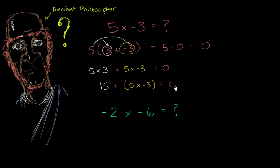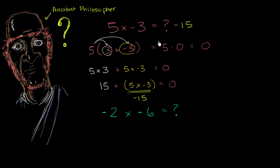So now we get: 15 plus whatever 5 times negative 3 is needs to be equal to 0, in order to be consistent with all of the other mathematics that we know. What plus 15 is going to be equal to 0? Well, the opposite of 15. So in order for this to be consistent, 5 times negative 3 needs to be equal to negative 15. And that's also consistent with the intuition of adding negative 3 repeatedly 5 times.